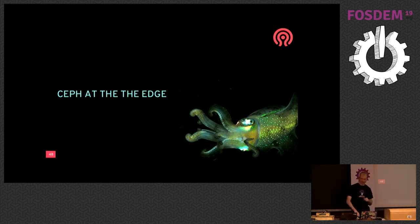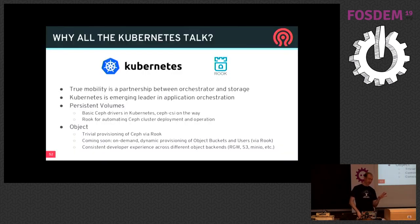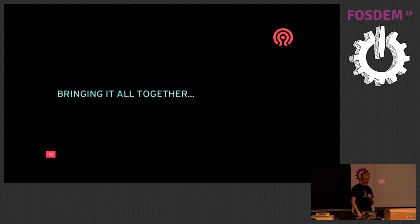Skipping the edge sites scenario due to time, let me explain why I keep talking about Kubernetes. Regardless of what the storage can do, you need to move the applications with it — true application mobility is a partnership between moving the application consuming the storage and moving the storage itself. That's why we're so interested in Kubernetes and the Rook project, which runs the Ceph cluster in Kubernetes. This falls into persistent volumes for file and block storage attached to containers, and increasingly object storage where we're building tools to automatically provision storage in Kubernetes and attach buckets to applications the same way you do block and file storage.